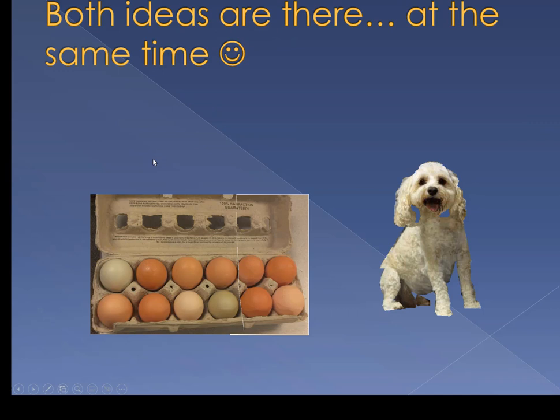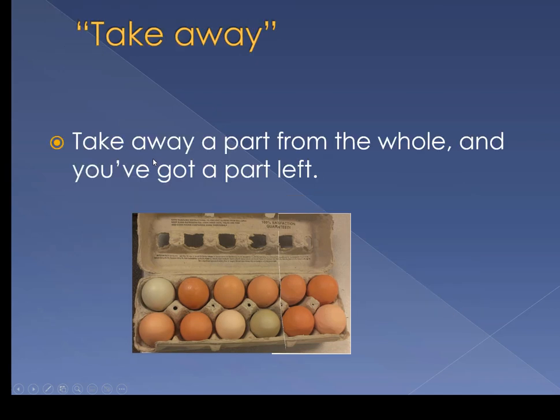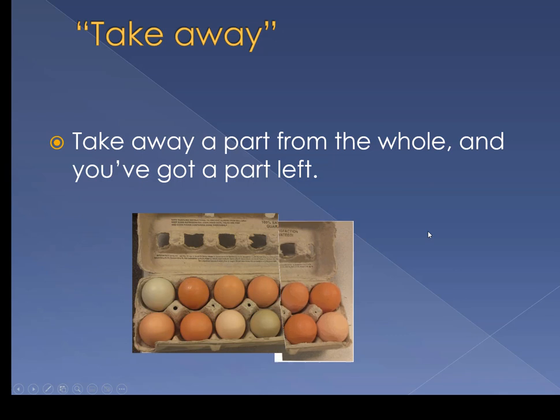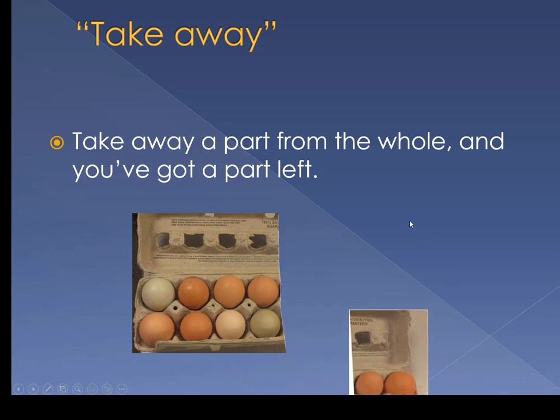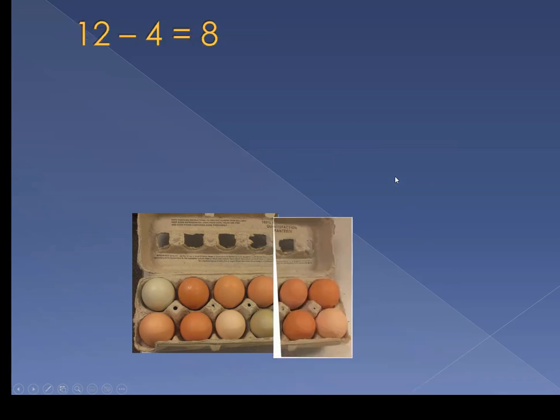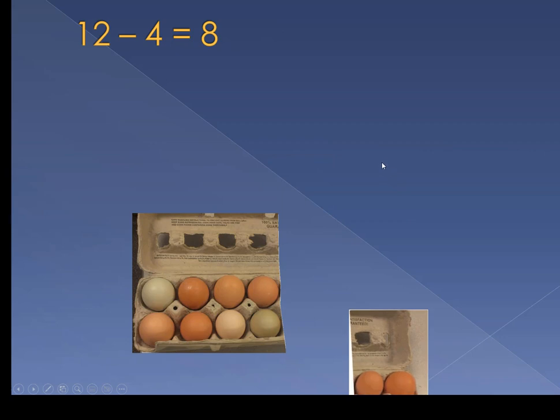Both ideas are there at the same time. Early understanding of subtraction is the idea of taking away. Take away a part from the whole and you've got a part left. Twelve minus four equals eight.